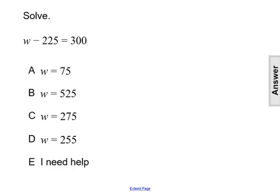Solve the equation w minus 225 equals 300. When asked to solve an equation, the goal is to isolate the variable or get the variable completely by itself on one side of the equation.